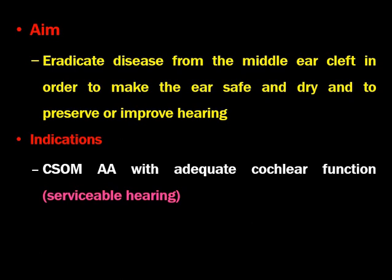What are the aims? As with other surgeries, the aim is to eradicate disease from the middle ear cleft in order to make the ear safe and dry, and to preserve or improve hearing. The important point is we have to remove the disease from the middle ear cleft — that is our basic aim — and we will try to preserve or improve hearing if possible. We can do tympanoplasty; usually in MRM we perform type III tympanoplasty, where we keep the graft over the stapes superstructure.